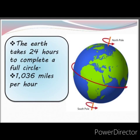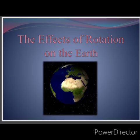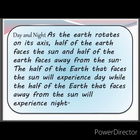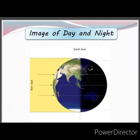The Earth rotates at 1036 miles per hour. Effects of rotation on the Earth: as the Earth rotates on its axis, half of the Earth faces the Sun and half faces away from the Sun. The half facing the Sun experiences Day, while the half facing away experiences Night. This is shown in the image of Day and Night — from the yellow side you can see the Sun's rays, and on the opposite black side is the dark Earth.